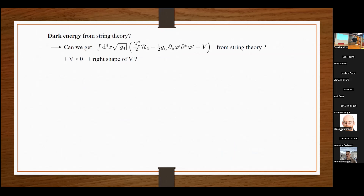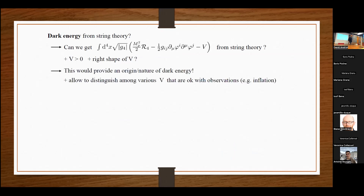The question is: can we get this from string theory? That means can we get such a theory from string theory, but also with a positive potential and with the right shape for the potential. The motivation is to provide some origin or nature for dark energy. It would also allow us to distinguish among various potentials, since for now the observations are still okay with many different potentials. It would be nice to distinguish among them if we had one from string theory and some which cannot be obtained from string theory.